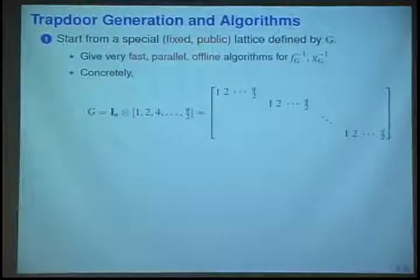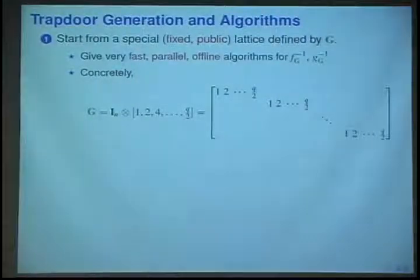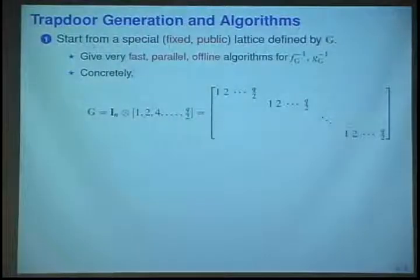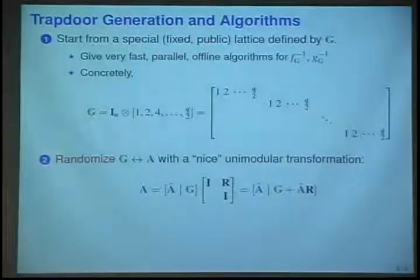Let me just show you a brief overview of what's involved. All these things have showed up in the literature in one place or another, and we're just combining them in new ways and giving better algorithms for dealing with them. So we start with a fixed lattice called G. That's a gadget. And this gadget is very structured, and we give some very specialized fast parallel offline algorithms for the inversion problems there.